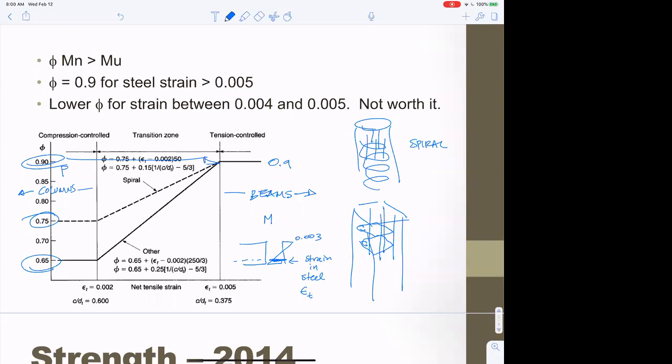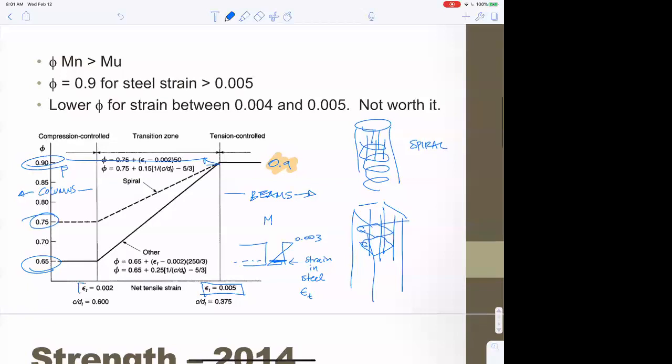In pre-2014, when that strain was 0.005 or higher, you could use φ equals 0.9. When that strain was 0.002 or lower, you would use phi of either 0.75 or 0.65 depending on spiral or tied. In between, you would interpolate. So the phi factor depends on the strain in the steel.